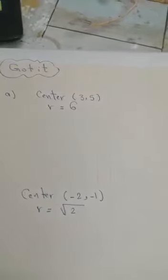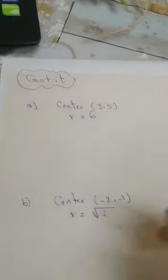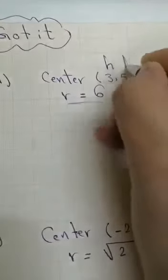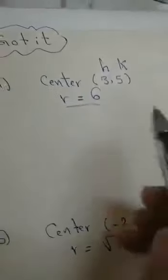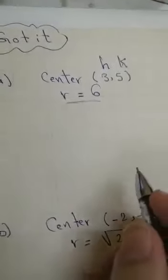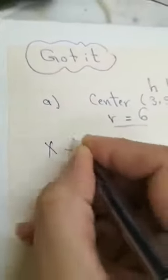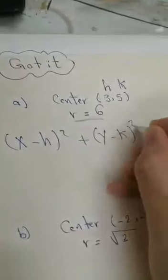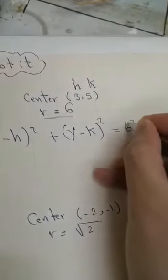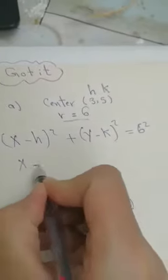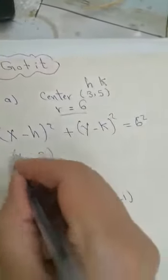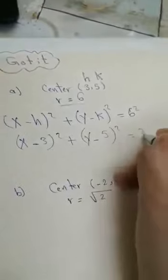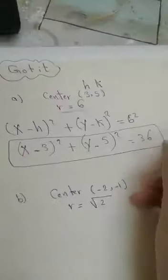Another problem: find the standard equation of a circle with center (3, 5) and radius 6. The coordinates give H = 3 and K = 5. Writing the equation: (x - h)² + (y - k)² = R², which is (x - 3)² + (y - 5)² = 6² = 36. That is my standard equation form.